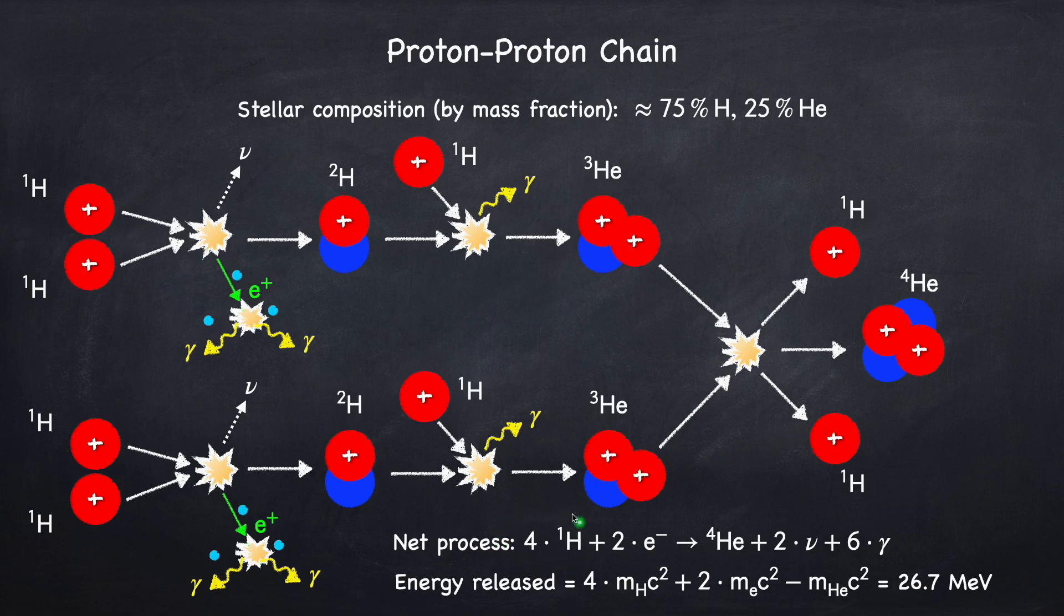The net process is that four protons plus two electrons are converted into a helium nucleus plus two neutrinos, and I wrote plus six photons, but probably a better way to say it is just plus some energy, because photon number is not a conserved quantity, so writing it as six photons is probably not the best way to do it. The net energy released will be the mass energy difference between the four initial protons and the two initial electrons minus the final alpha particle, and this is about 26.7 MeV. Now remember, part of that is going into neutrinos, and that energy is lost.